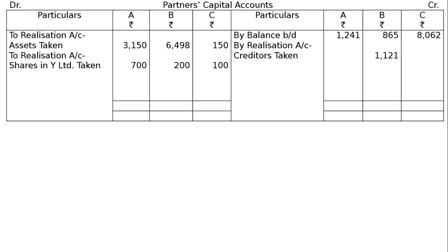Then, Realization Account — Shares in Y Limited taken: A Rs. 700, B Rs. 200, C Rs. 100. Loss to Realization Accounts: A Rs. 259, B Rs. 74, C Rs. 37.